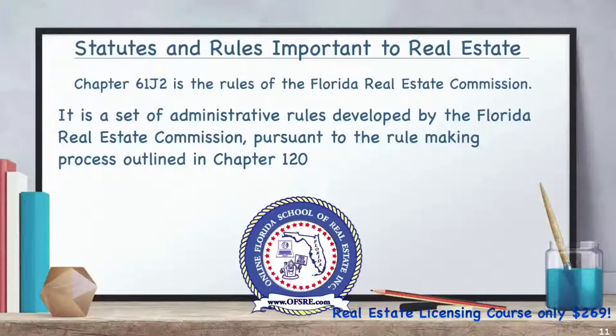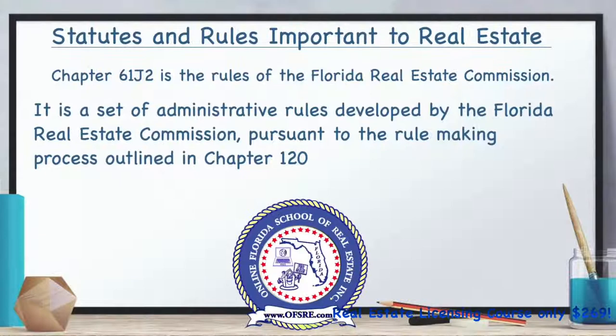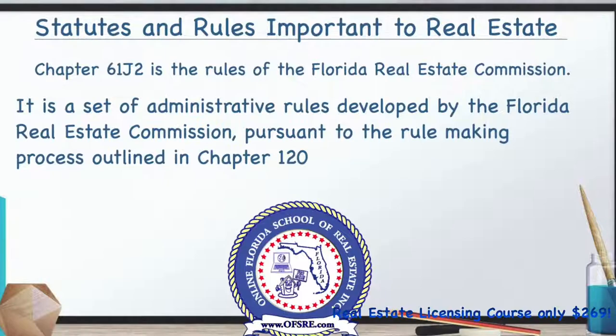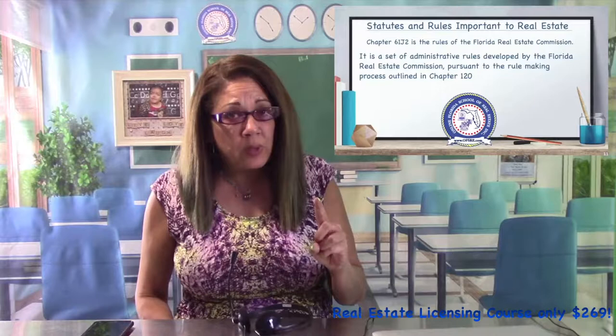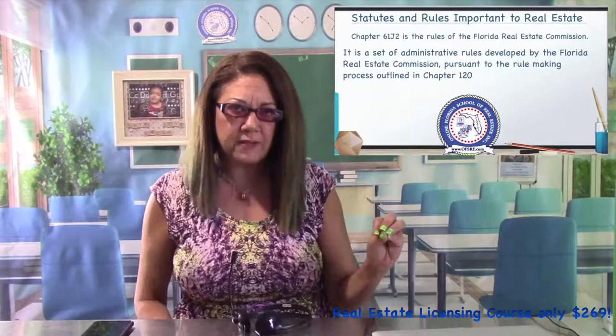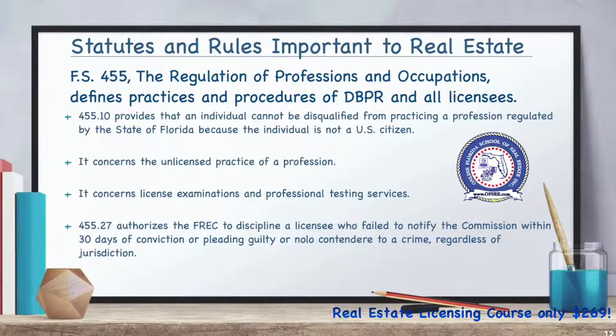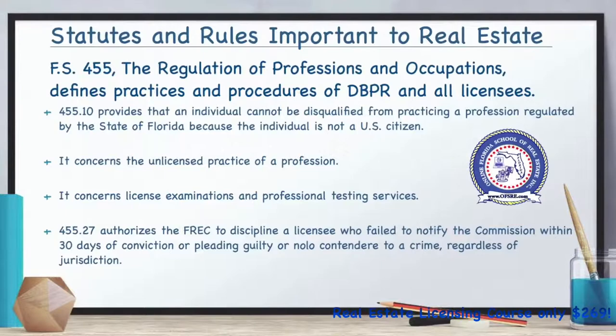Chapter 61J2 contains the rules of the Florida Real Estate Commission — a set of administrative rules developed by the FREC pursuant to the rule-making process outlined in Chapter 120. Chapter 455 defines the practices and procedures for the Department of Business and Professional Regulation (DBPR) and for all professions regulated by the DBPR, including real estate.